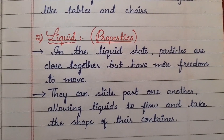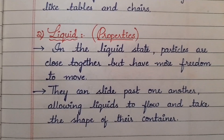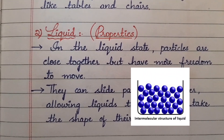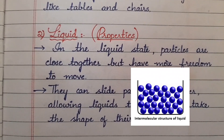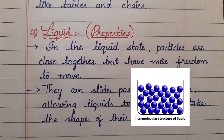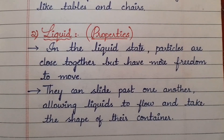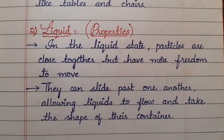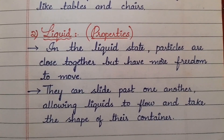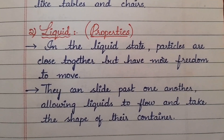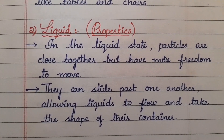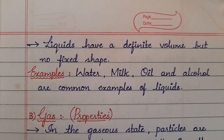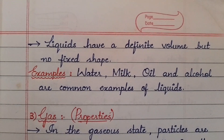Coming to the second one, the liquid state. In the liquid state, particles are close together but have more freedom to move. They can slide past one another, allowing liquids to flow and take the shape of their container. Liquids have a definite volume but no fixed shape.